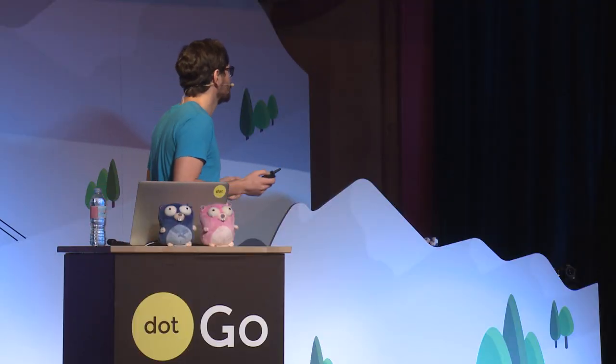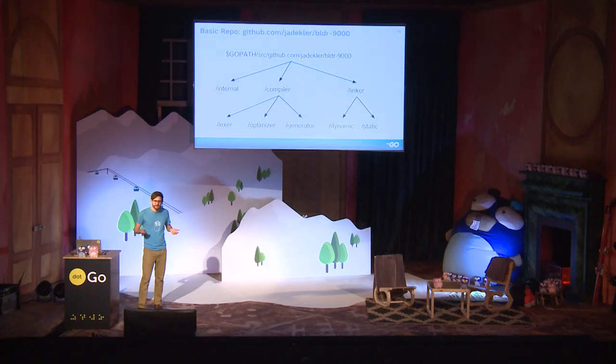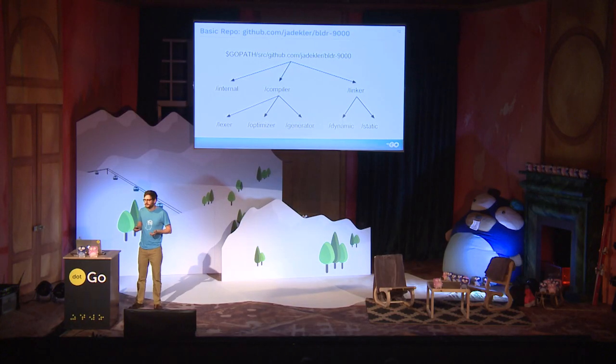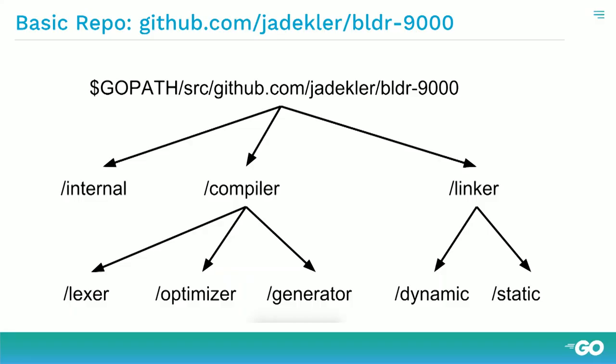So what are modules? For this talk, we're going to use a fictional repository called Builder 9000. Builder 9000 has a couple of packages in it: a compiler, a linker, an optimizer, and so on. These are completely made up. I'd like you to think of this as something other people depend on — a library that people consume.